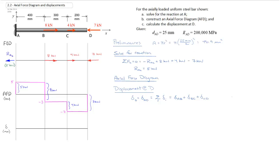Now we just recall our fundamental design equation for axial displacements, where displacement equals P_i times L_i divided by E_i times A_i — I'm using the subscript i to denote individual sections. So we go down here and I'll be very explicit, and we'll fill in the values for each section.